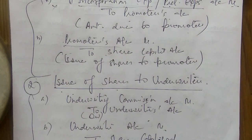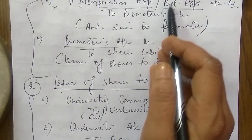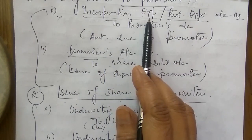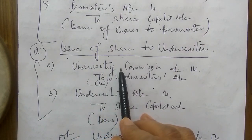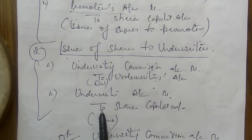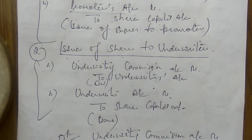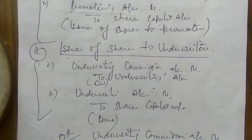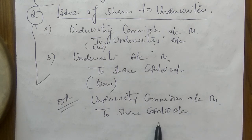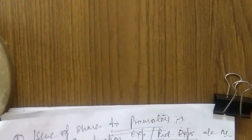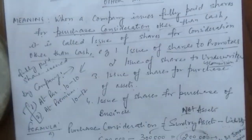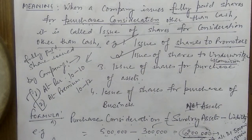To recap the first two cases: for promoters — Incorporation Expenses Account Dr. To Share Capital Account (shares issued for services). For underwriters — Underwriting Commission Account Dr. To Share Capital Account (shares issued as commission). In both cases, shares are going out from the company as fully paid shares, and a corresponding expense or liability is being settled.